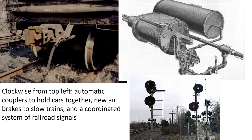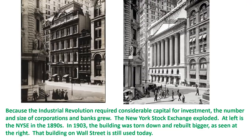There were other inventions as well in the late 19th century: automatic couplers that hold train cars together, new air brakes to slow trains, and a coordinated system of railroad signals. Because the Industrial Revolution required considerable capital for investment, the number and size of corporations and banks grew. The New York Stock Exchange exploded — on the left you can see the exchange earlier in the 19th century, and on the right the building replaced in 1903, which is much bigger and still used today.